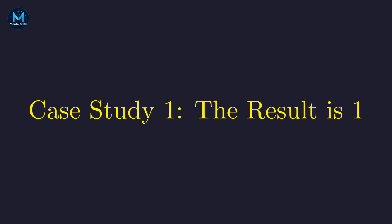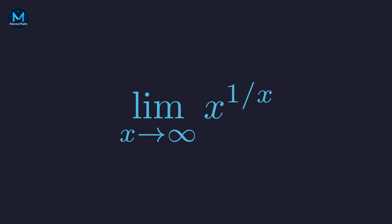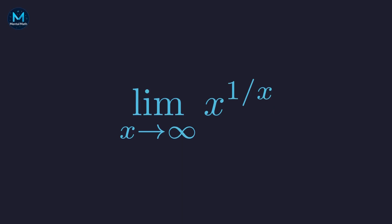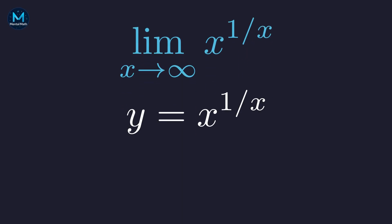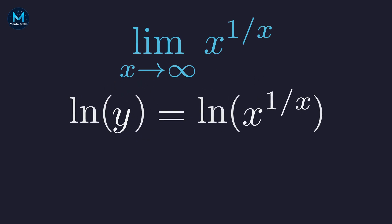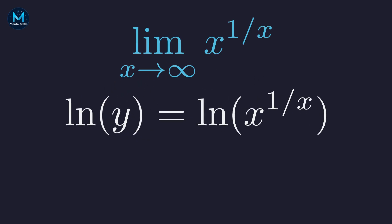Let's explore three examples that yield three entirely different results. First, a case where the answer turns out to be one. Consider the limit as x approaches infinity of x to the power of 1/x — here x grows without bound while 1/x shrinks toward zero. We let y equal x to the power of 1/x and apply our log trick to both sides: the natural log of y equals the natural log of x to the power of 1/x.